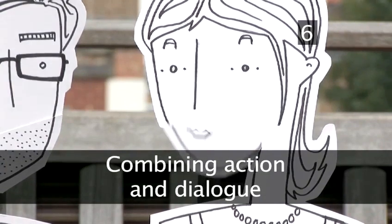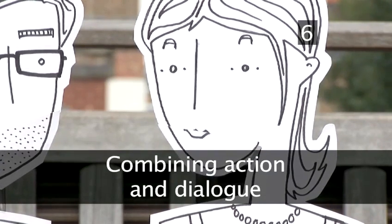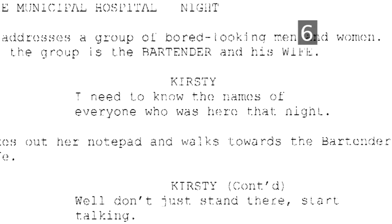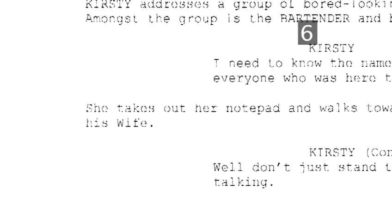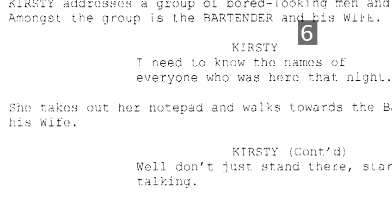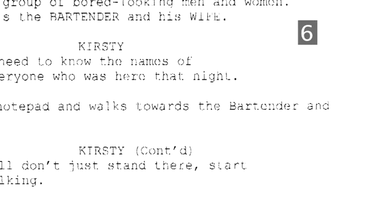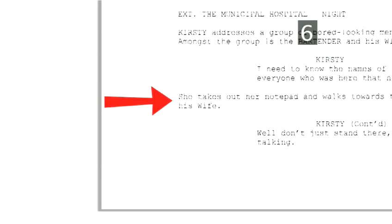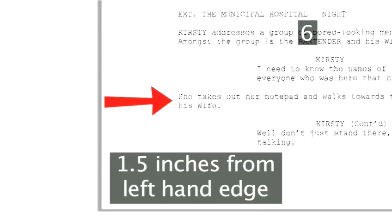Step 6: Combining action and dialogue. If a description of action breaks up a character's dialogue, then it must be written like this. Kirsty: "I need to know the names of everyone who was here that night." She takes out her notepad and walks towards the bartender and his wife. Kirsty (continued): "Well, don't just stand there. Start talking." Remember to start your action description 1.5 inches in from the left-hand edge of the page, as it's part of the narrative or scene direction.